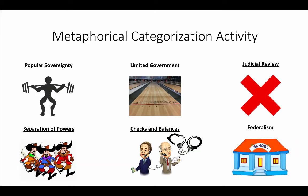Let me give you some examples from each category. Starting at the top left, with popular sovereignty — someone lifting weights may not make total sense at first, but if the idea of popular sovereignty is that the power of government comes from the people, this person is essentially powerful and lifting up the country. For limited government, you have a bowling lane — you cannot cross the line or else you will be penalized. That illustrates that the government only has a certain number of things they're allowed to do.